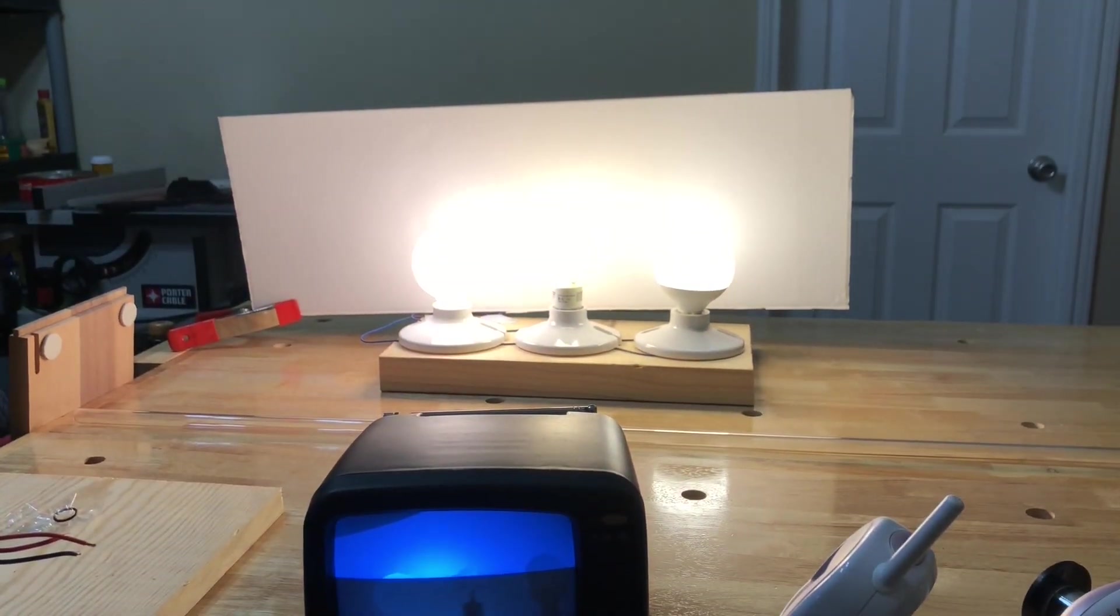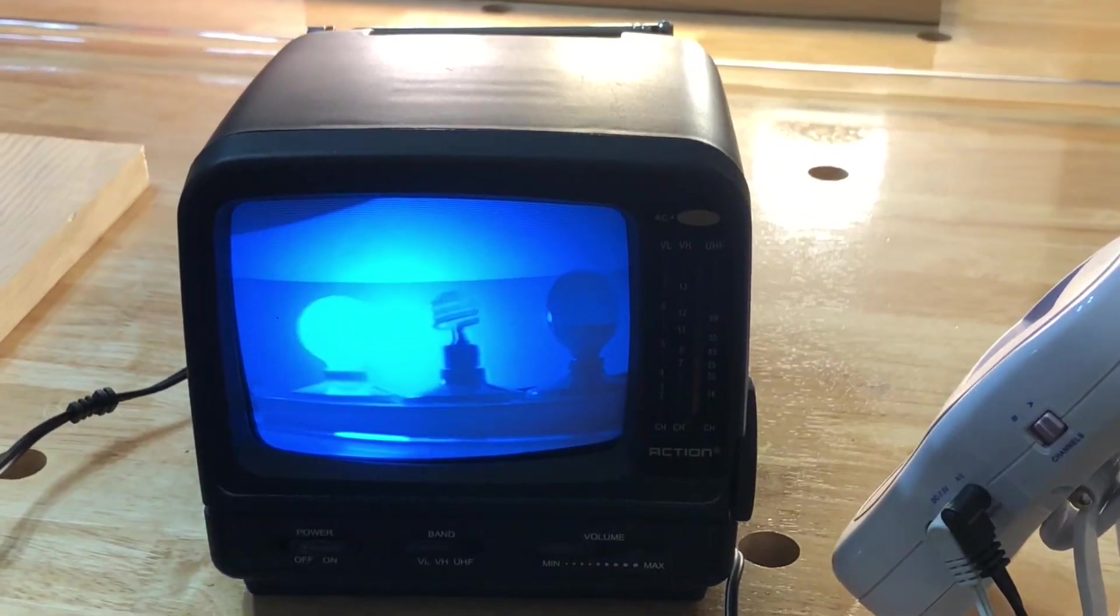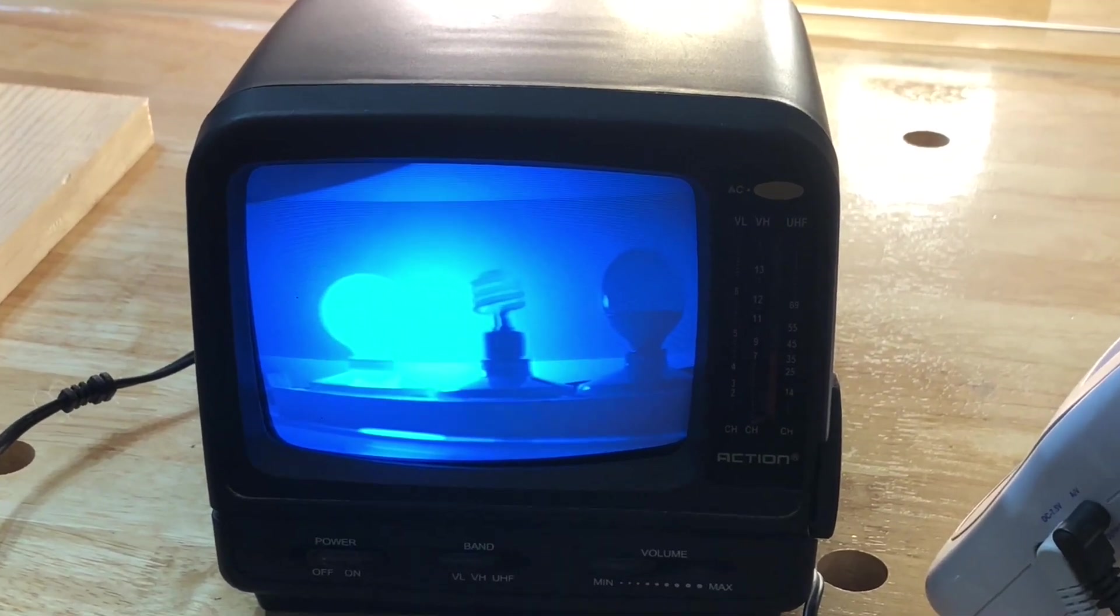Nothing better illustrates the differences in efficiencies of different light sources than viewing the light sources with a near-infrared camera. The following example features from left to right an incandescent lamp, a compact fluorescent lamp, and an LED lamp.